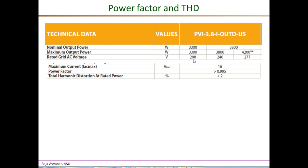The first performance measure we will look at is the power factor of the inverter. Almost all string inverters operate at exactly unity power factor, so as shown here the power factor of this particular product is very close to one. The power injected by the inverters is limited by the current rating, which for this product is 16 amperes. Unity power factor operation ensures that we inject the maximum possible power for a given current rating, and that is the reason why most inverters operate at unity power factor.